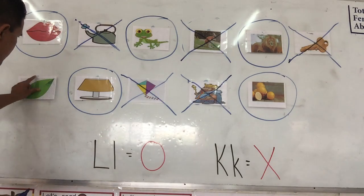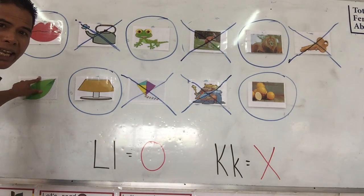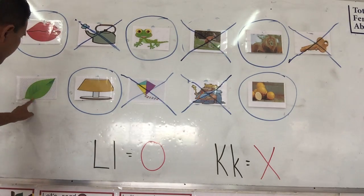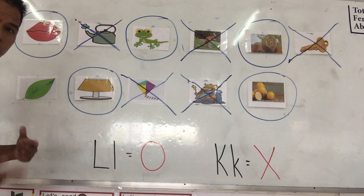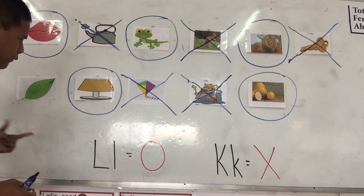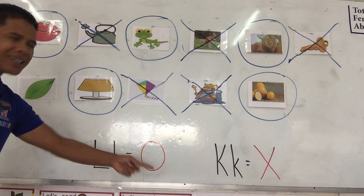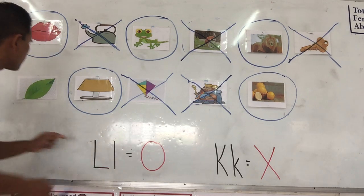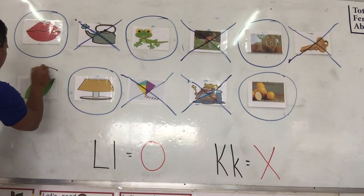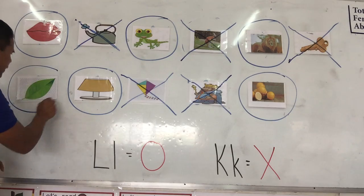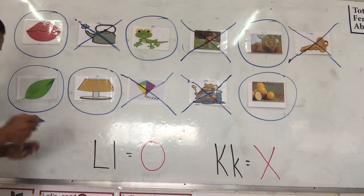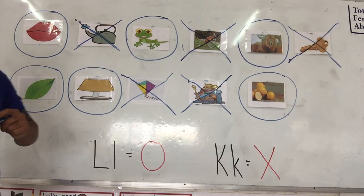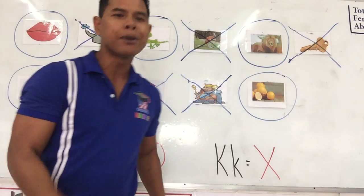Next one is leaf. Leaf. So which one is it? Leaf. L. Yes, it is the letter L. So we circle it. Excellent job.